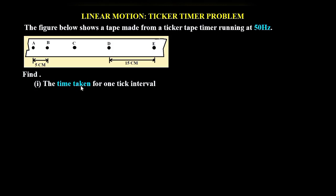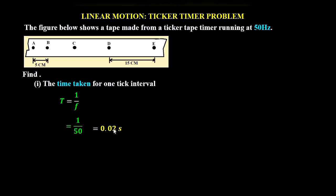For part one, find the time taken for one tick interval. We are told the ticker timer frequency is 50 hertz. One tick interval represents the period, and therefore the period is obtained as 1 over the frequency: 1 over 50 hertz. That gives us 0.02 seconds.